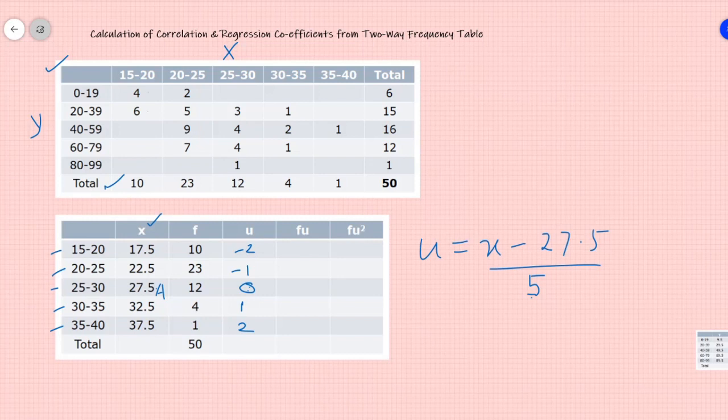So f into u: minus 20, minus 23, 0, 4 into 1 will give me 4 and 1 into 2 is 2. So minus 43 plus 6 will give me minus 37. fu square is nothing but fu into u, fu multiplied by u. So minus 2 into minus 20 gives me 40, this is 23, 0, 4 and another 4. So 8, 3, 11 and 60, the total for this would be 71.